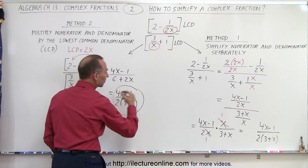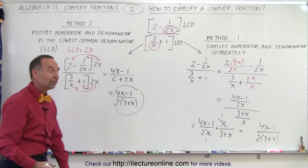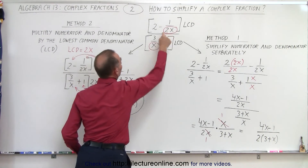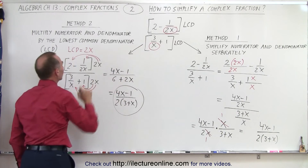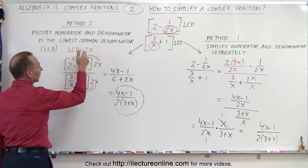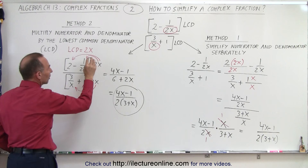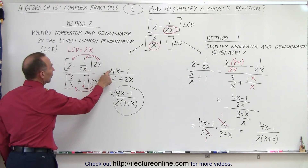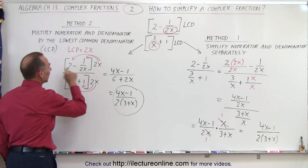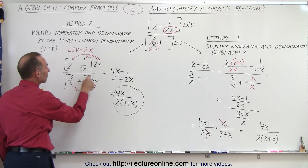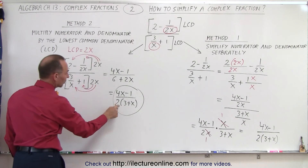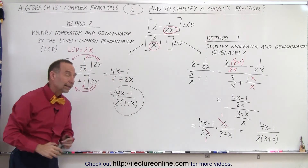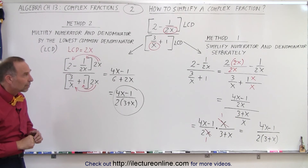Notice we get the exact same result as before. So all we have to do is find the lowest common denominator by looking at all the denominators — in this case, 2x. Multiply the numerator and denominator of the complex fraction by that LCD: 2x times 2 is 4x; 2x divided by 2x is 1 giving negative 1; 2x times 3 over x is 6; and 1 times 2x is 2x. Then factor if you can, and that's how you end up with the same result.